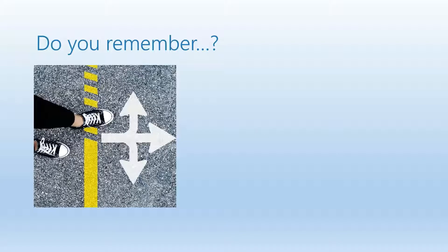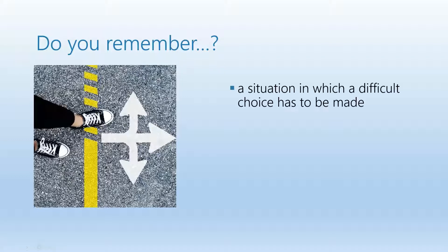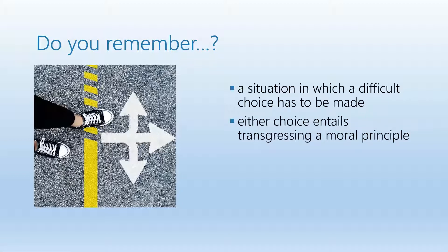What we talked about last time: we said a moral dilemma is a situation in which a difficult choice has to be made. We explained what the concept means, what it refers to, and we gave some examples — the Crowded Lifeboat, Sophie's Choice, and the Robin Hood Dilemma.